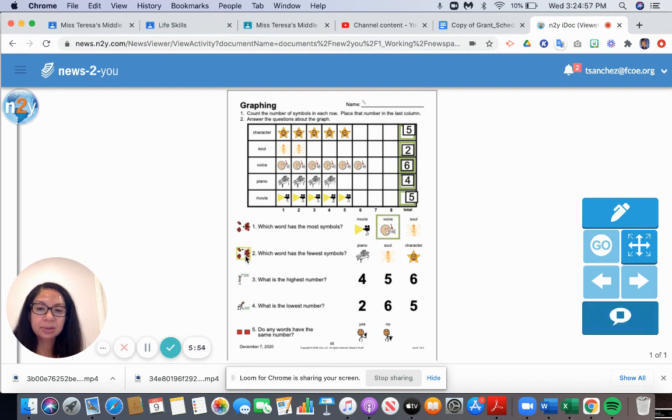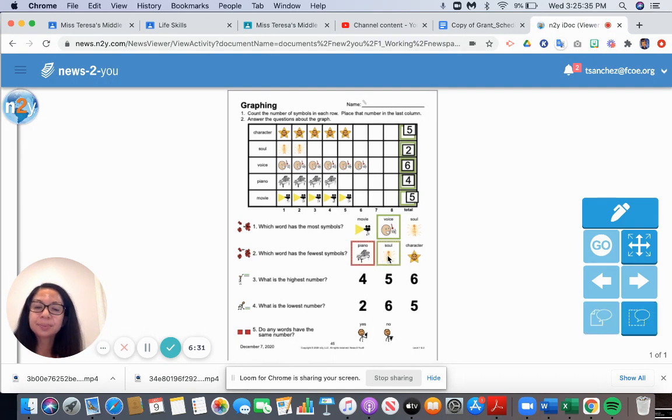Question two: Which word has the fewest symbols? The smallest number. We have five, two, six, four, or five. Or look at the pictures. I think these pictures, which are soul, have the least amount. They only have two, and there's none less than that. Is it piano? No. Is it soul? Yes, soul has the fewest symbols.